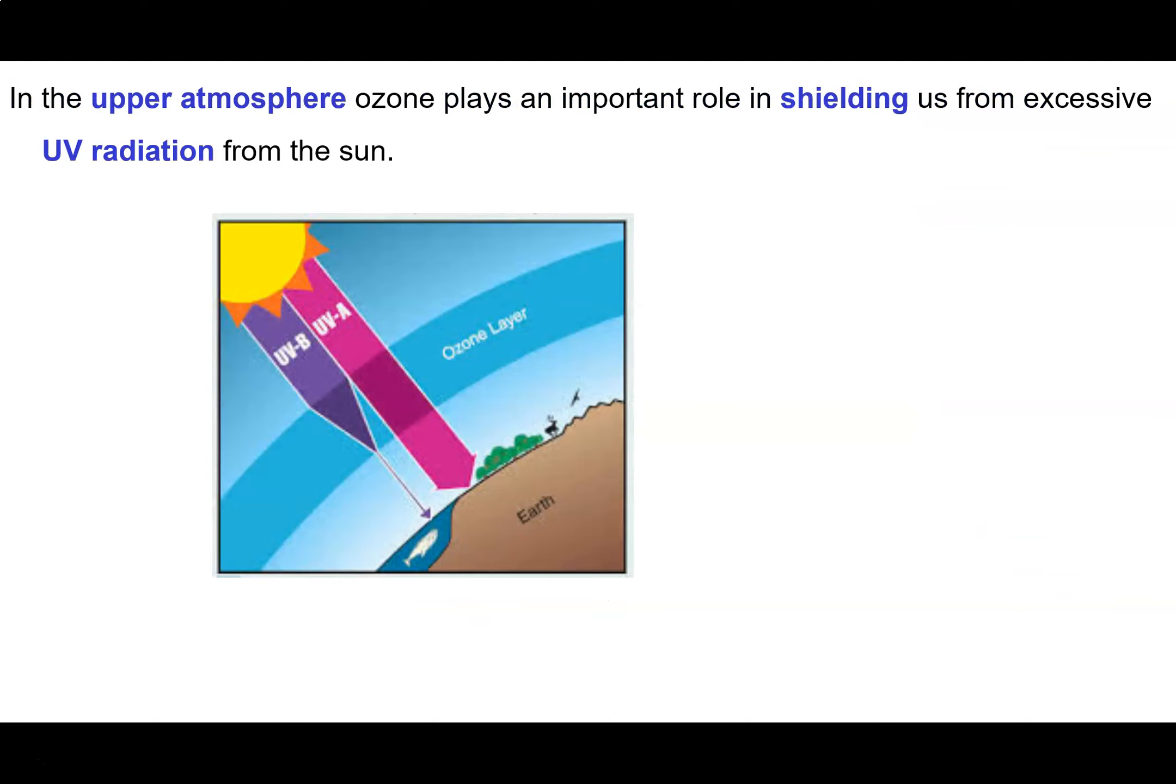In the upper atmosphere, you've probably heard of the ozone layer. Ozone plays an important role in shielding us from UV radiation from the sun. In particular, it blocks a type of UV radiation called UVB, which can lead to skin cancers and other things. There's a small band of ozone right at the top of our atmosphere.